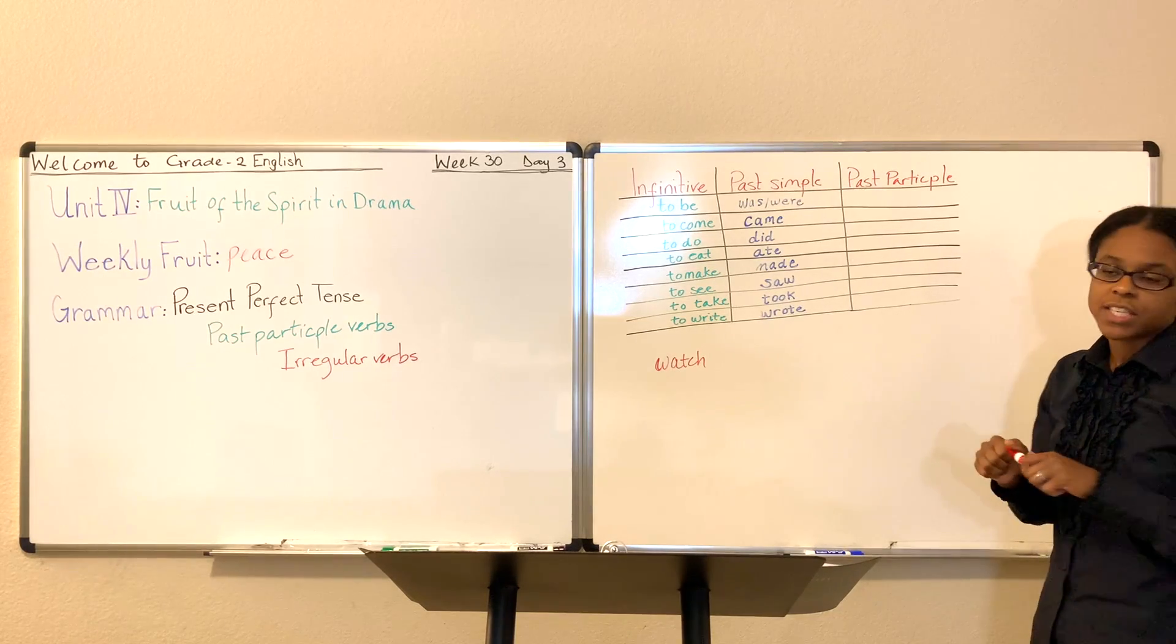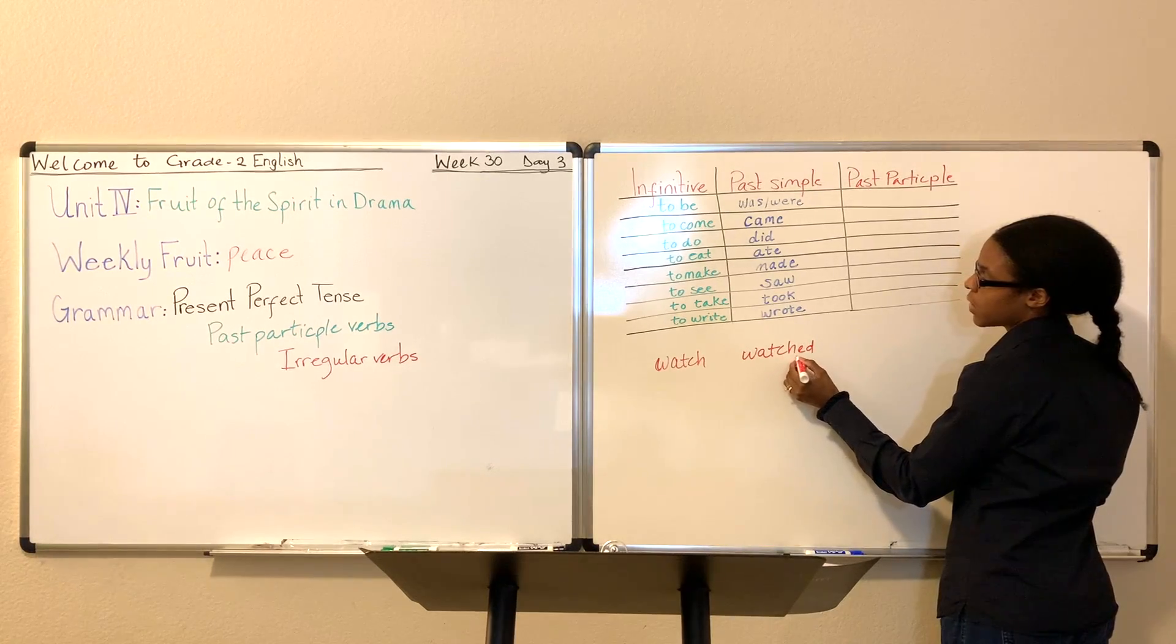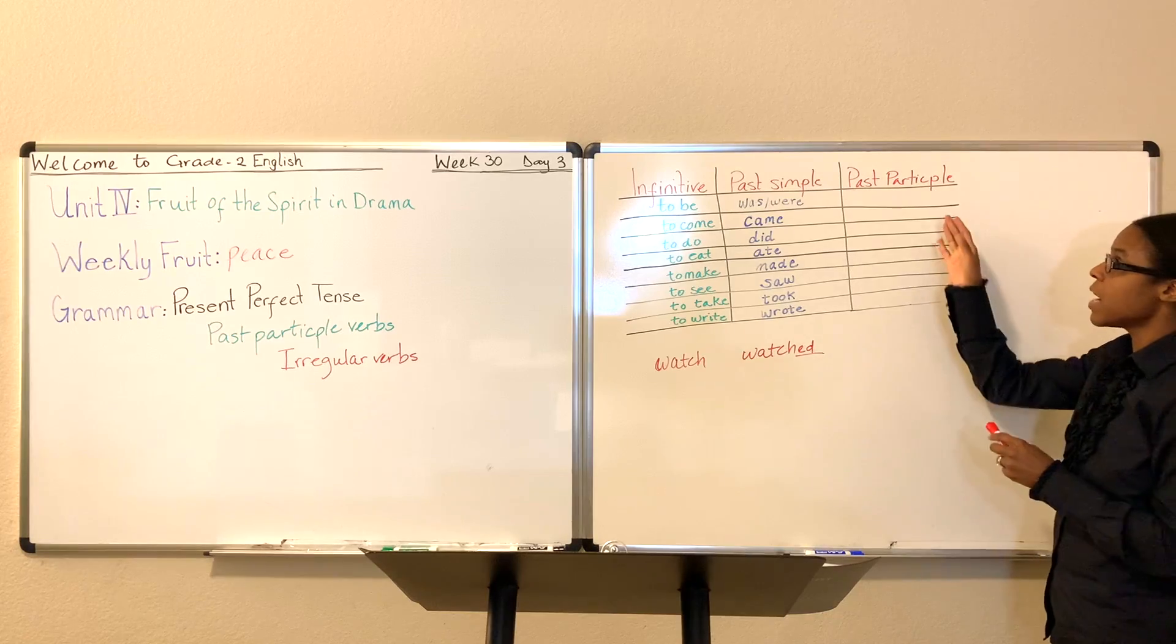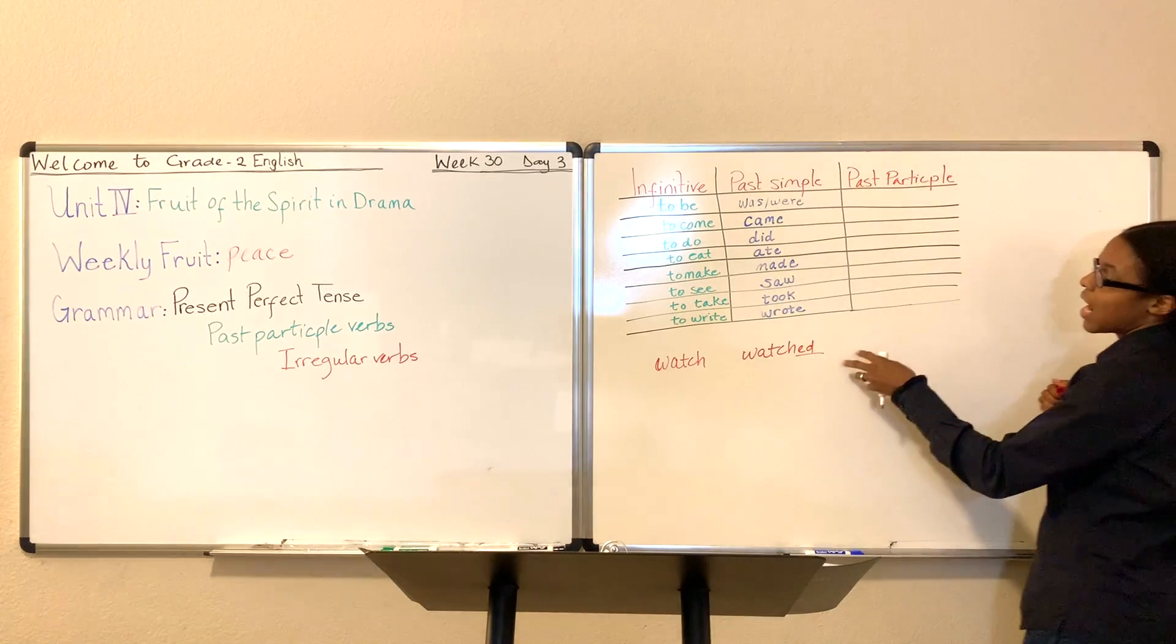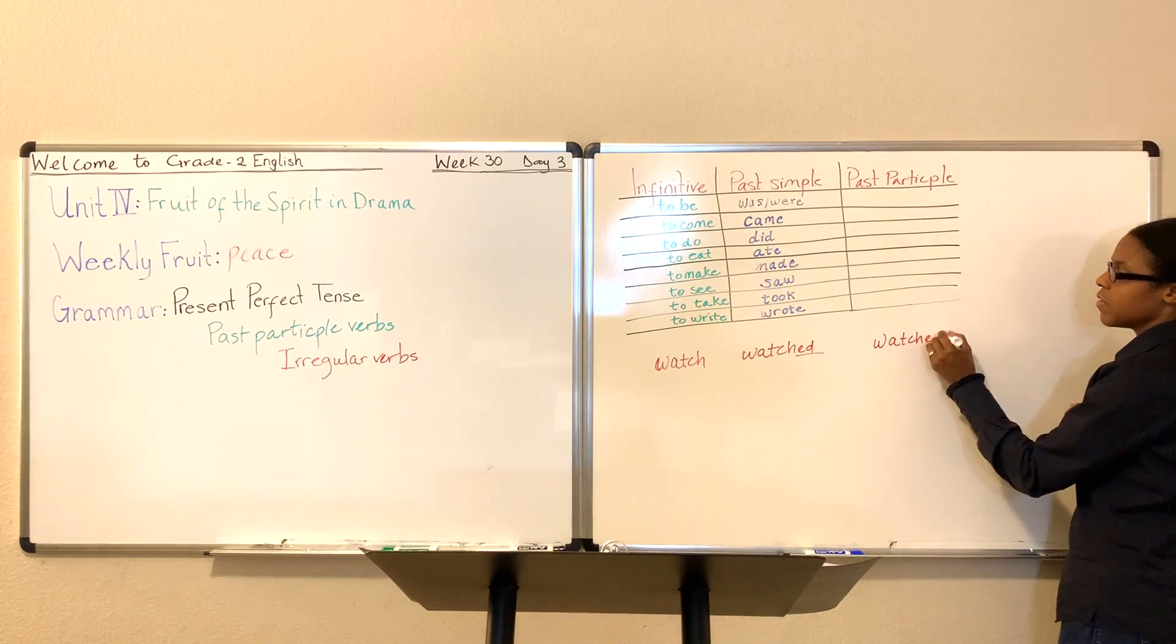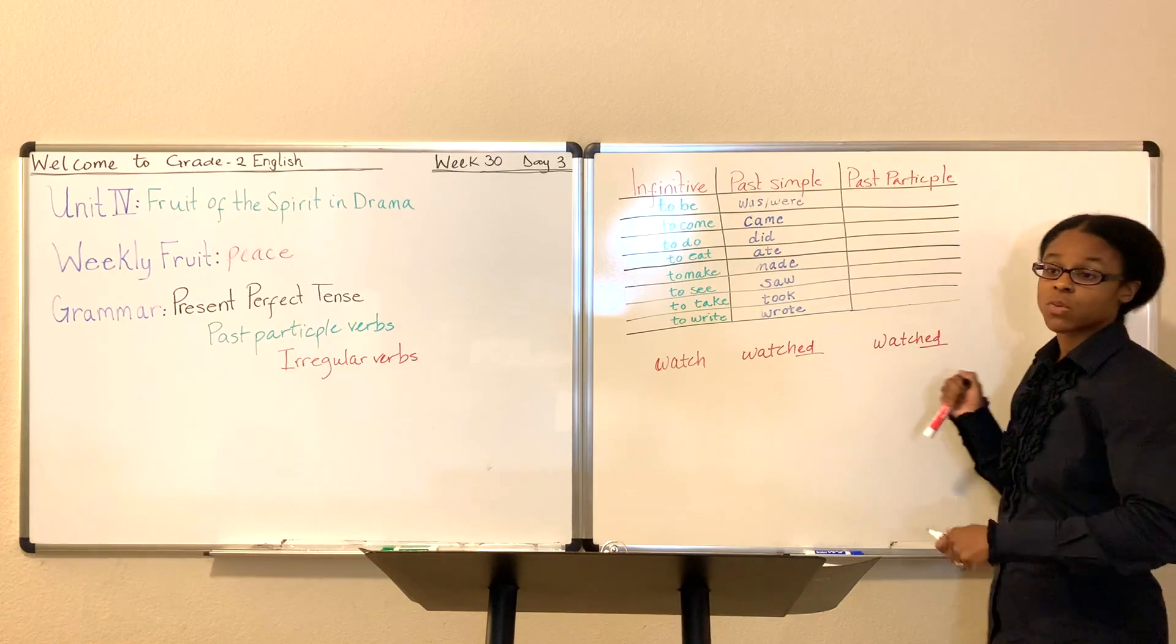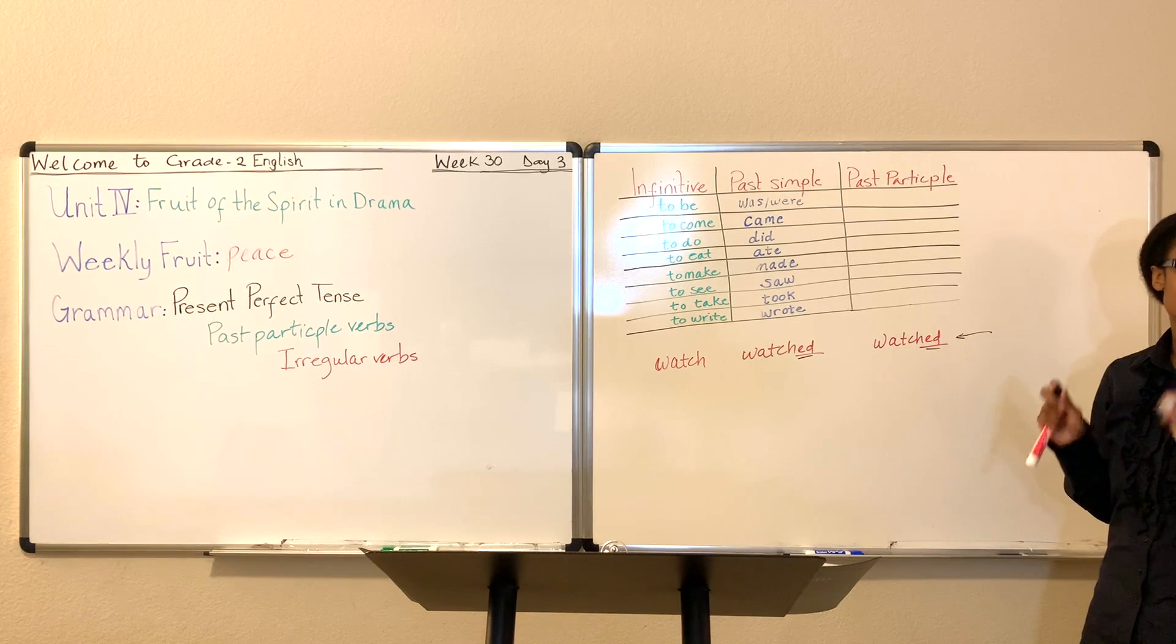Past simple is I watched TV, right? I watched TV. What makes this verb normal is that, or you can say regular, what makes this particular watch regular is that you just add ED to the end of your past simple. Past participle is going to be have or has. Don't forget your auxiliary verb have or has. So, you're going to say, I have watched TV. But even with adding that, the past participle verb is still just add ED. Because the only thing you have to do to change tenses with this particular word, watch, all you have to do is add ED. That makes this verb a regular verb.